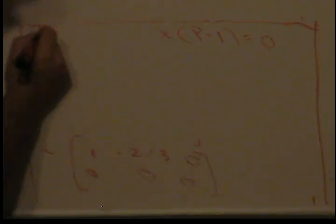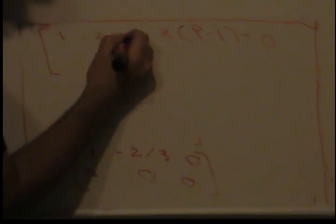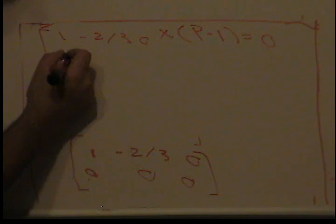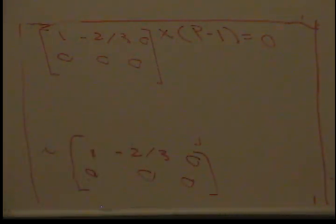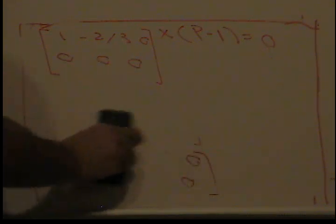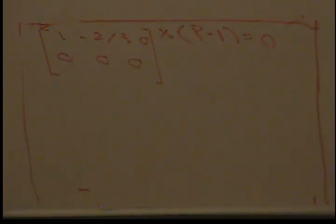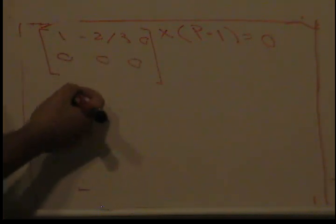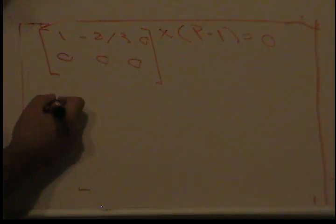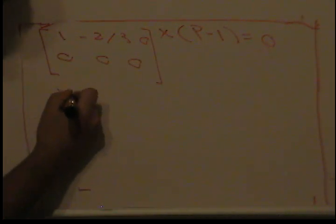Okay, so let me go ahead and erase this. So we got that when we row reduce it, we got 1, negative 2/3, 0, then we got 0, 0, 0. Okay, from here we have to find the basis for the column space. So in order to do that, we have to write this in vector form. As we can see here, our X2 is free.